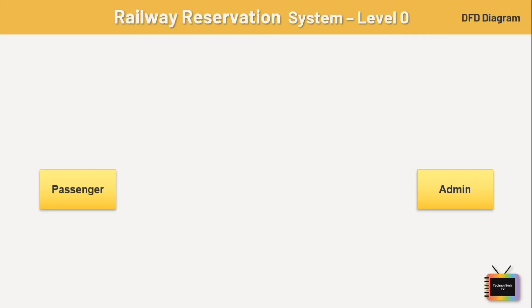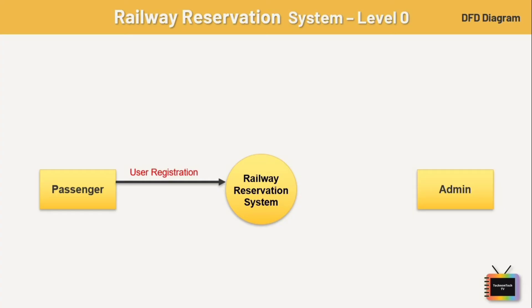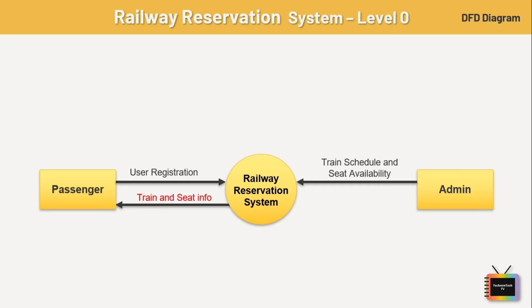Let's see the relationship between passenger, admin, and the railway reservation process. First is user registration — it verifies user credentials during login. Next is train schedule and seat availability — admin manages information about trains including schedules, routes, and seat availability and gives it to the railway management system, which then displays train and seat availability information to the passenger.